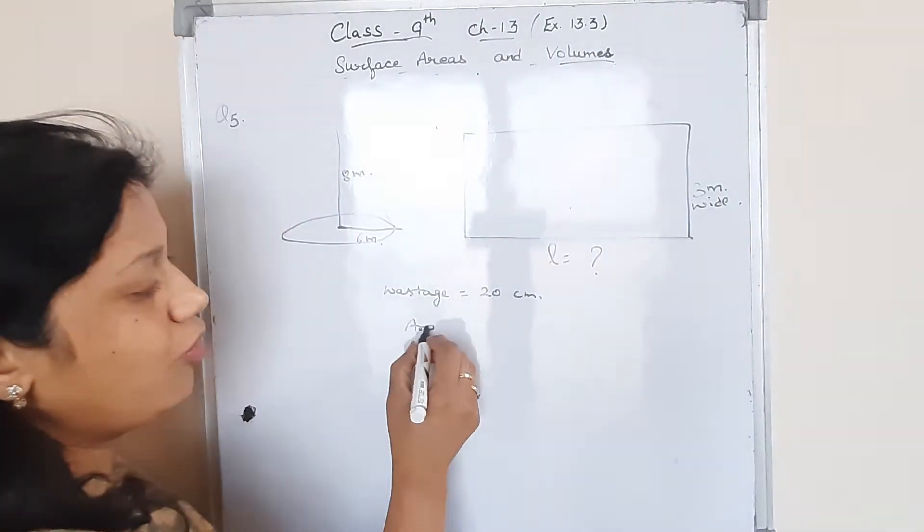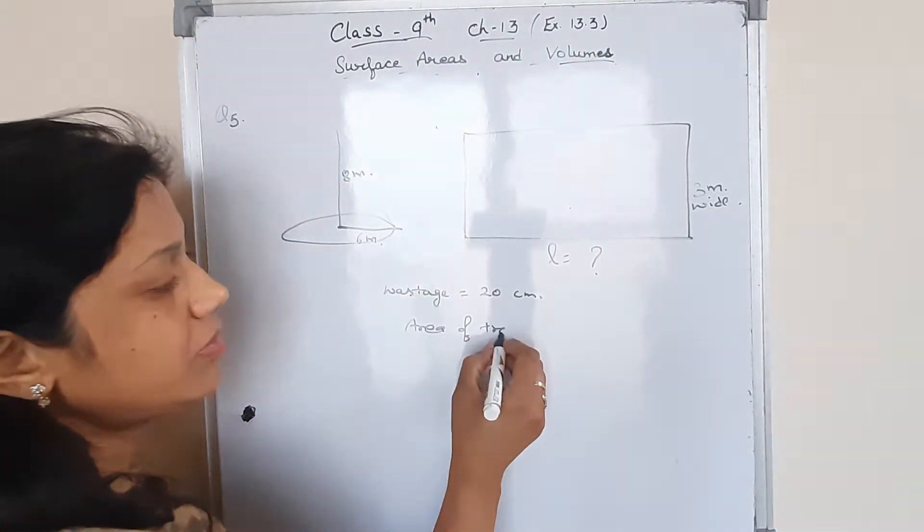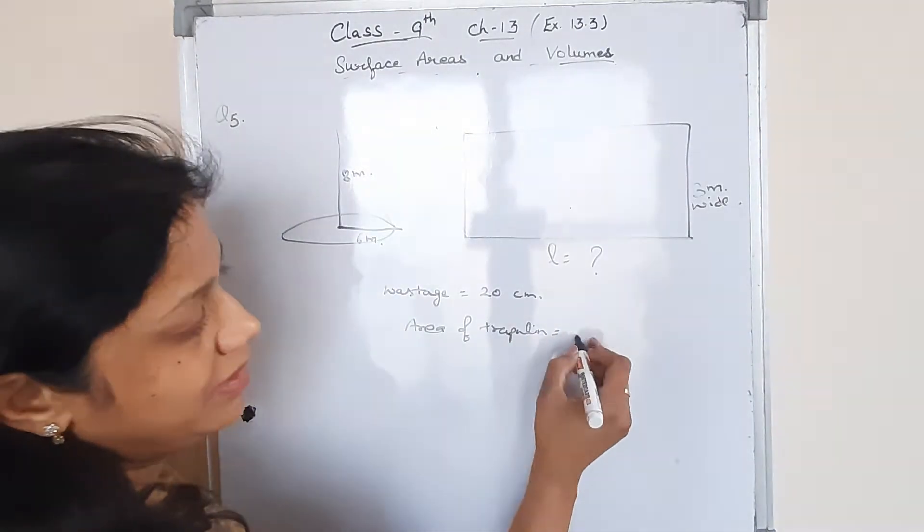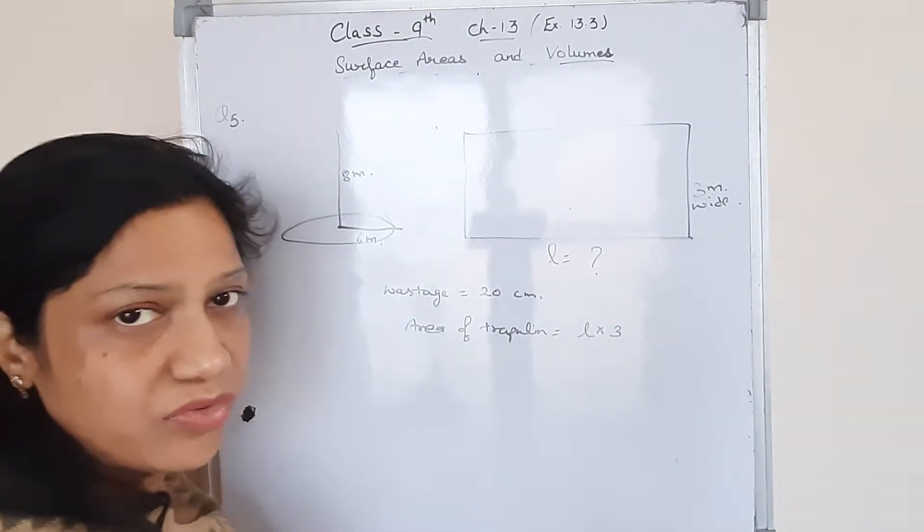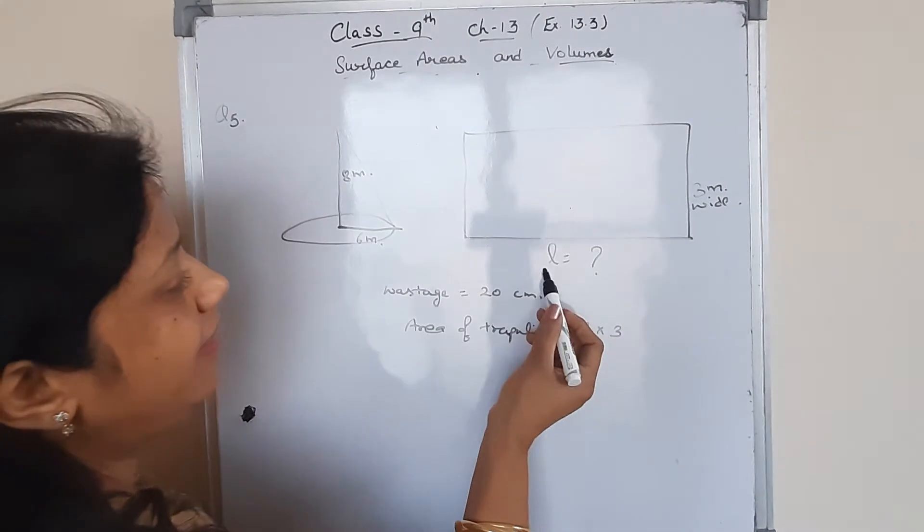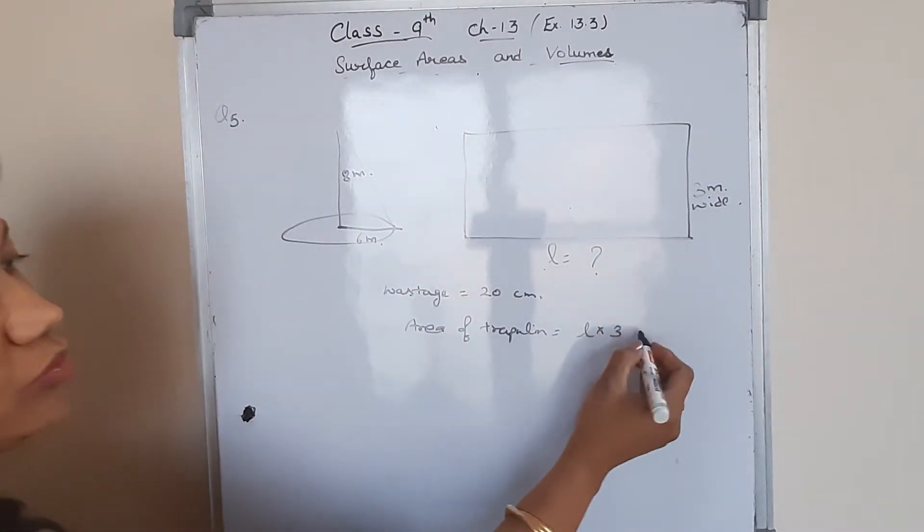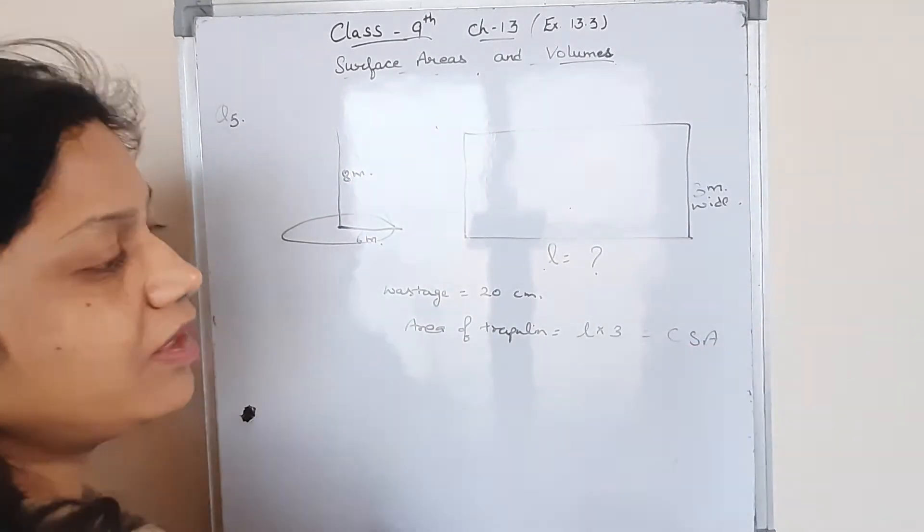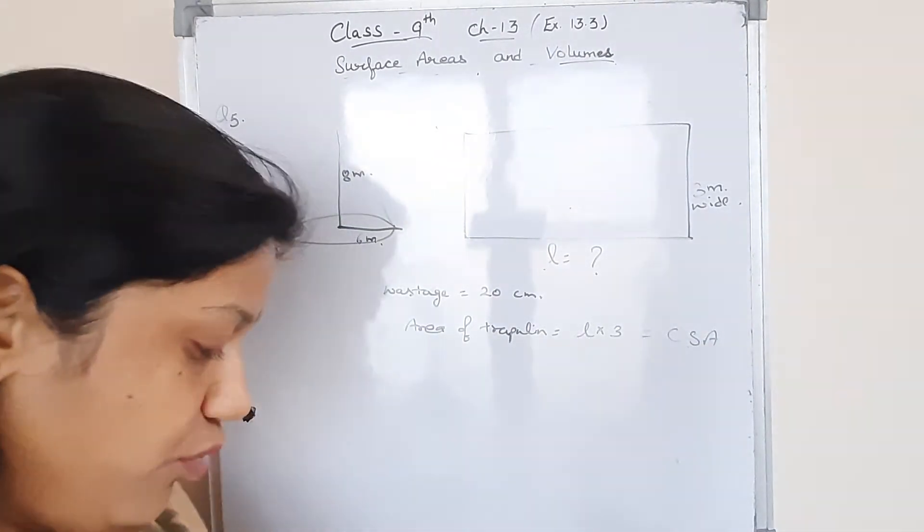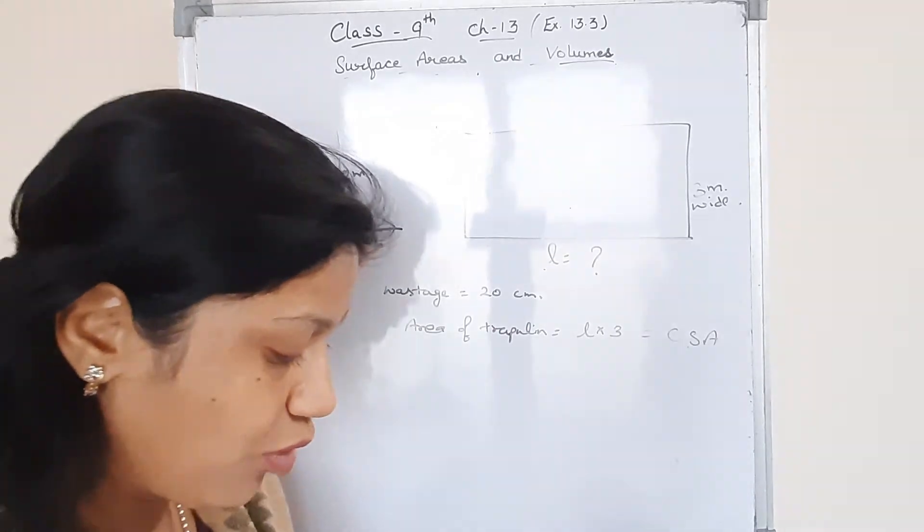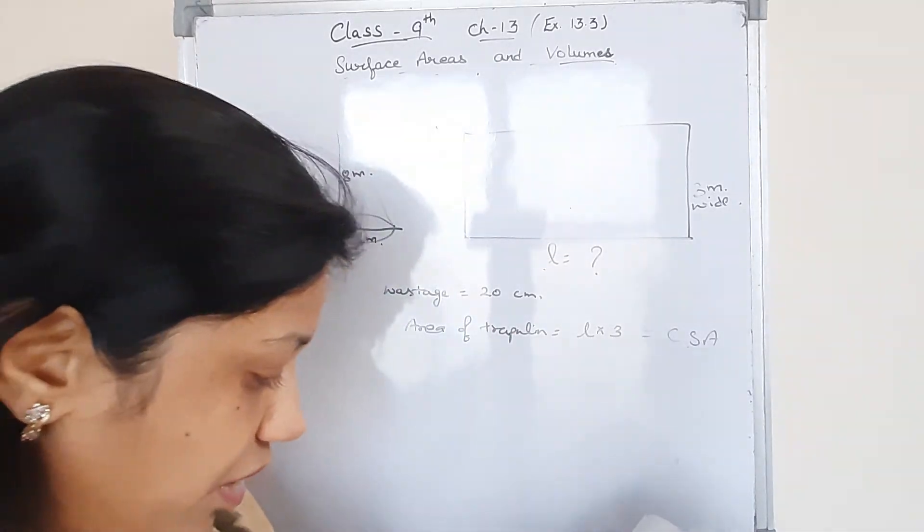It means the area of the traplin will be length into the breadth 3 meter. And it is given to you that it is equal to the curved surface area. So whatever you get, just keep it and we need to add the wastage also in the length after cutting it.